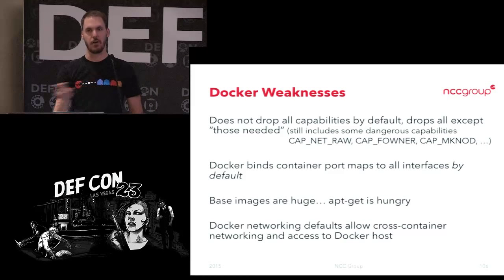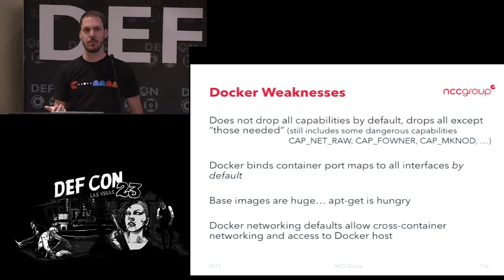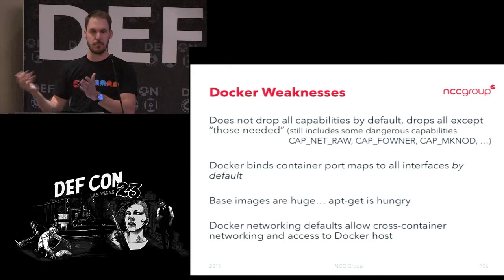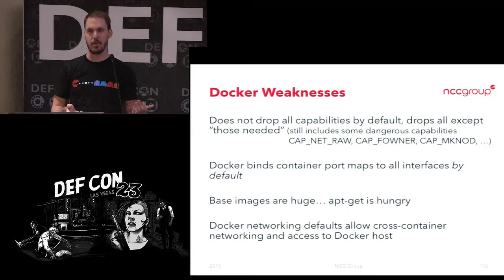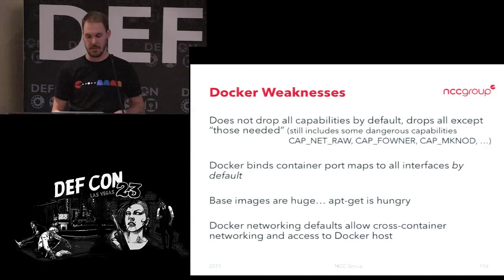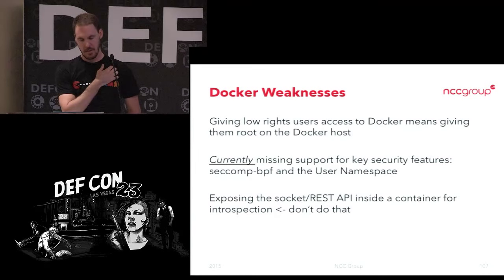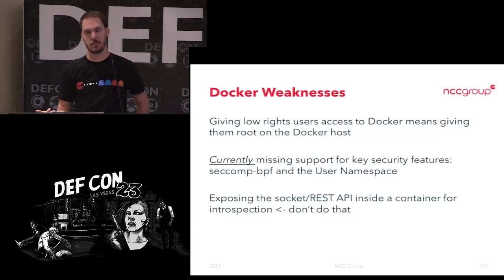Docker still keeps CAP_NET_RAW and CAP_FOWNER by default. You can still make devices in your container — limited by AppArmor but your app probably doesn't need those so you should drop them. There's also the GitHub supply chain problem: dependencies pulling from five vendors who accept commit requests from random people on GitHub, and all that code is being chained down to some kid in a basement whose commits end up in data centers. There have been backdoored AMIs published before, so we'll see what happens. Also, a lot of people in their Dockerfile use a large base image like Ubuntu that pulls in 250 megabytes of packages you don't need — there's a whole bunch of stuff there that could be used to attack or break out of the container. Exposing the Docker socket inside the container for introspection — don't do that, that's giving your container root on your host.